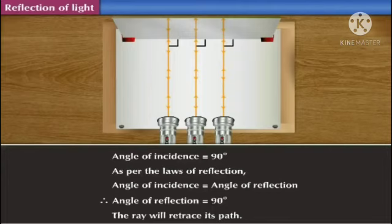This happens because as per the law of reflection, here the angle of incidence is 90 degrees. According to the law of reflection, angle of incidence should be equal to angle of reflection. Therefore, angle of reflection is also 90 degrees, so the ray will retrace its original path.